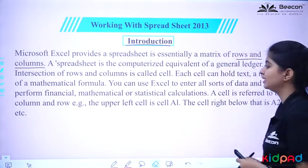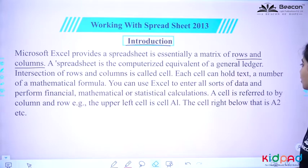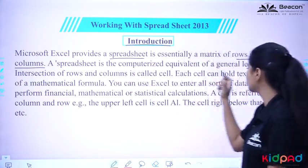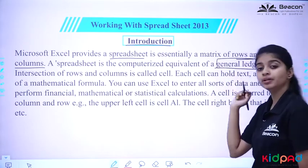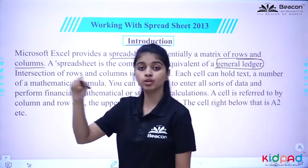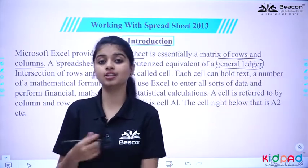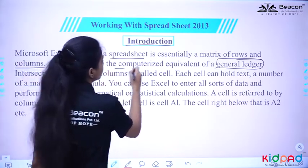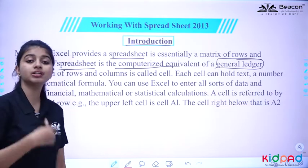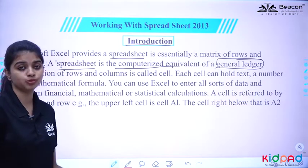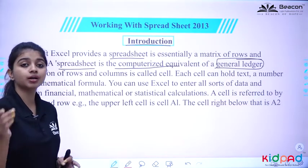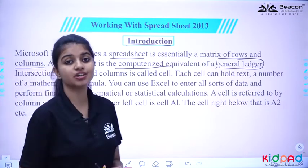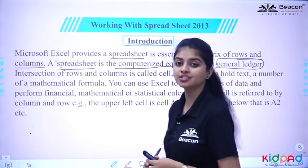A spreadsheet is the computerized equivalent of a general ledger. We use this spreadsheet as we use ledger books. Ledger books also work by manually creating and writing all things. So a spreadsheet is a computerized ledger — that means we have all the estimates on the computer. If we use it in the computer, we use the spreadsheet.